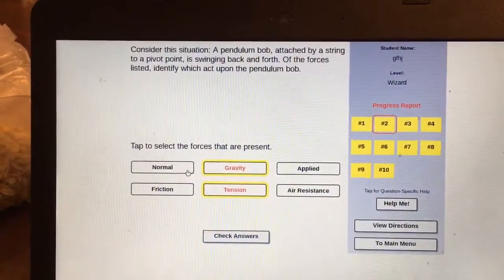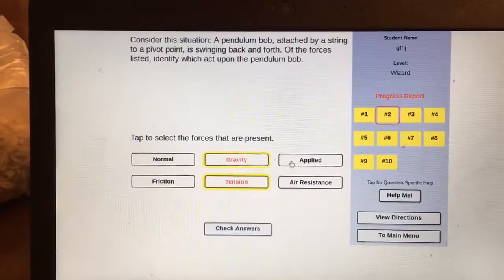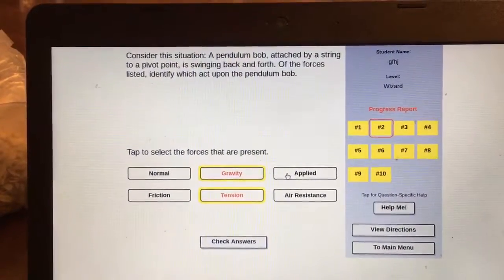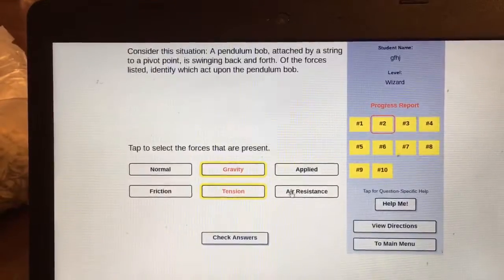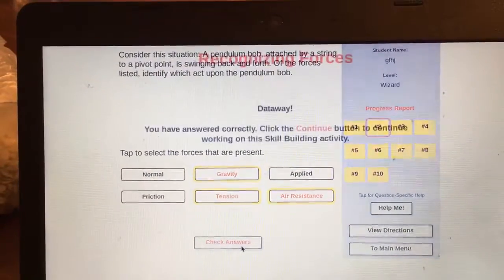Gravity. It's not on the surface, so no normal. It's not on the surface and no friction. It's not being pushed, so no applied. And it's moving through the air, so air resistance. And then you check your answer. And there we go.